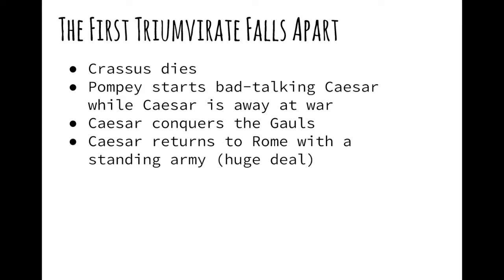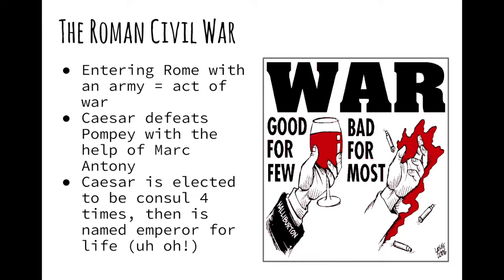While Caesar is away at war, Pompey begins spreading rumors about Caesar. Caesar, having many allies, hears of Pompey's subterfuge and decides to return to Rome with a standing army in order to obliterate Pompey's power. The reason that entering Rome with a standing army is a big deal is because the Romans had declared the Rubicon River on the border of Italy to be a sort of line of peace, where generals were required to disband their ranks of soldiers so as not to appear to be marching on Rome. However, Caesar defied this tradition, maintaining his army and marching on Rome. A civil war is any war where a country fights against itself, and that is what happened with Rome. Pompey fled to Egypt, where Caesar's young relative Mark Antony beheaded him, and Caesar was celebrated as victor.